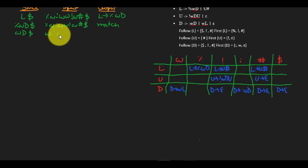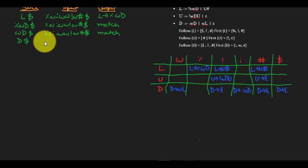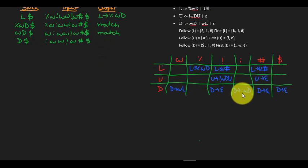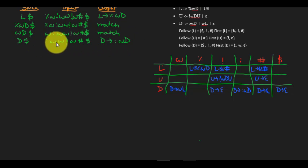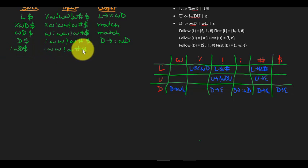So we are left with WD and dollar on the stack, and W:WWW# dollar as the input. W and W is a match, so we pop off W and we are left with D dollar and :WWW# dollar. D on colon — we get D goes to colon WD. So we pop off D and we push colon WD inside the stack, and we are left with the dollar, WW and the rest.